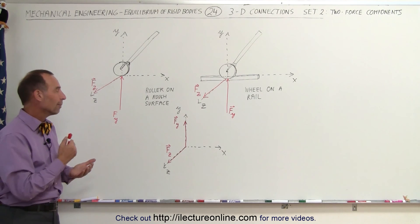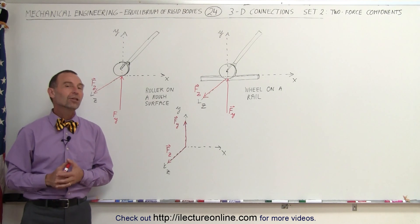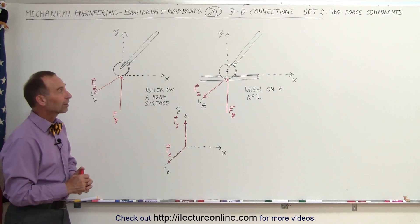So there are two unknowns in this case: the magnitude in the Y and the magnitude in the Z direction on this particular set of connections.